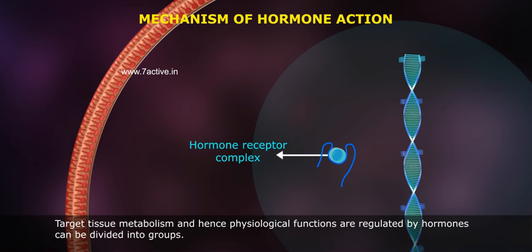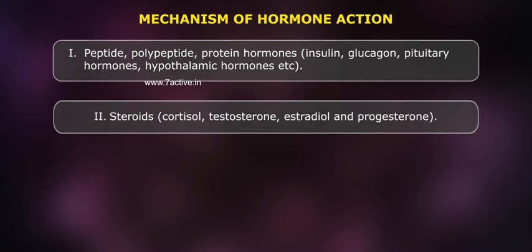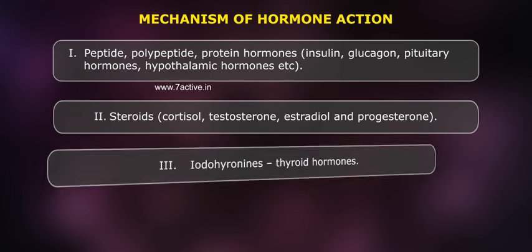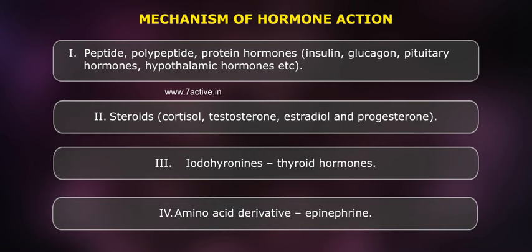Target tissue metabolism and physiological functions regulated by hormones can be divided into groups: 1. Peptide, polypeptide, and protein hormones — insulin, glucagon, pituitary hormones, hypothalamic hormones, etc. 2. Steroids — cortisol, testosterone, estradiol, and progesterone. 3. Iodothyronins — thyroid hormones. 4. Amino acid derivatives — epinephrine.